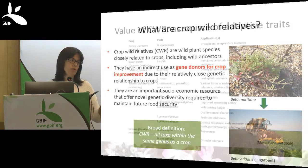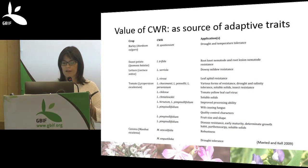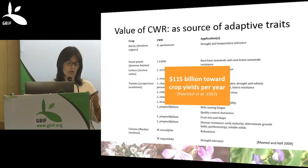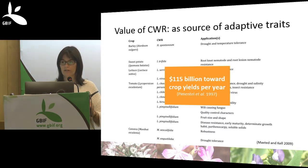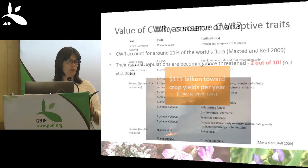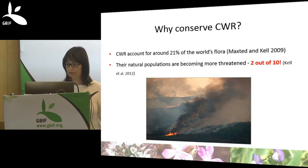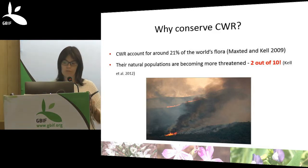Crop wild relatives have been used for many years as a source of adaptive traits, with examples for barley, sweet potato, tomato, lettuce, and cassava. Their contribution has been valued at more than 100 billion dollars towards crop yields per year. They account for 21% of the world's flora, but as wild plant species they are becoming threatened. A recent study by Sheila Kell and colleagues in 2012 found that 2 out of 10 crop wild relative species in Europe are threatened with extinction.